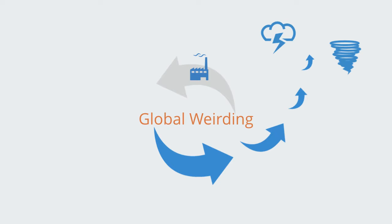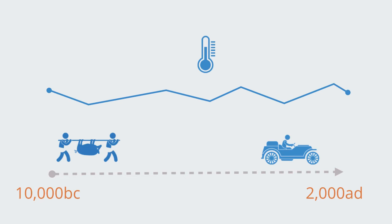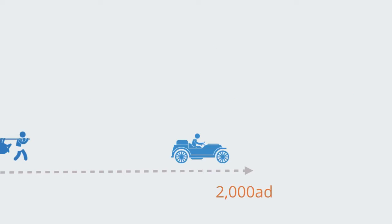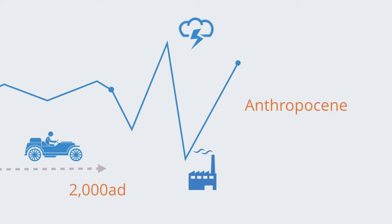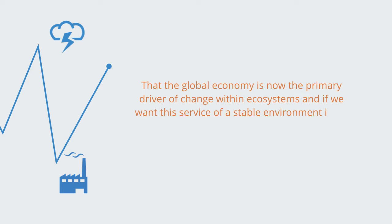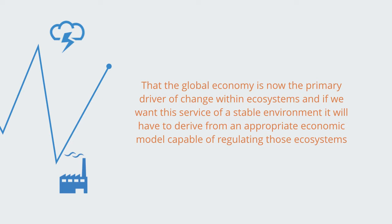We have benefited for over 10,000 years, since the beginning of the Holocene, from Earth regulating itself to create an environment conducive for human economic activity. The Anthropocene is a recognition that this stable geological era has ended — that because of human intervention, the biosphere can no longer stabilize itself within the same equilibrium that has benefited societies in the past. The global economy is now the primary driver of change within ecosystems, and if we want the service of a stable environment, it will have to derive from an appropriate economic model capable of regulating those ecosystems.